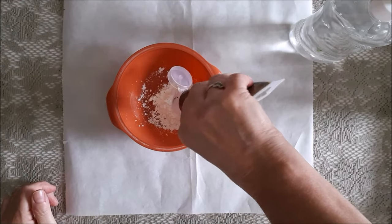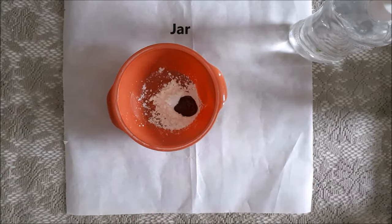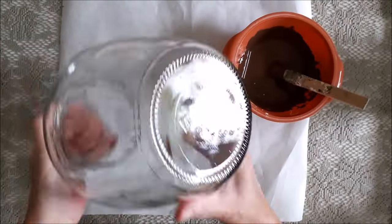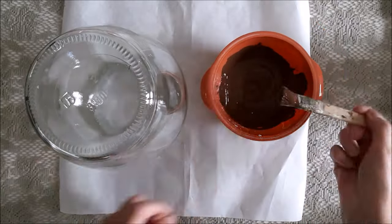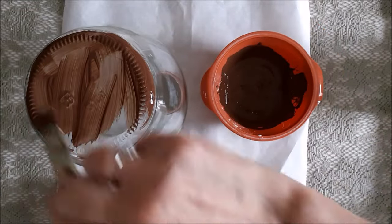For my second jug, I did exactly the same recipe for the paint and I did two coats of brown paint, drying in between, on this vase here.